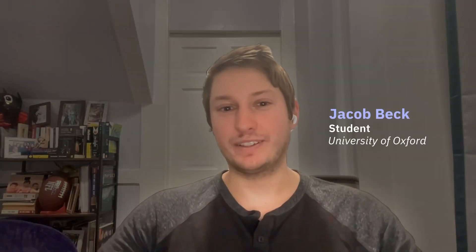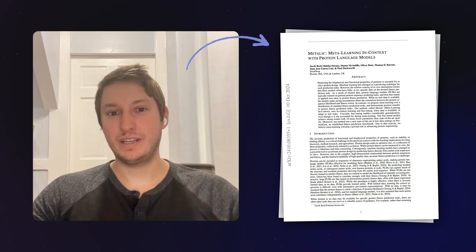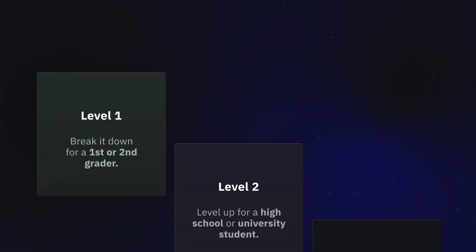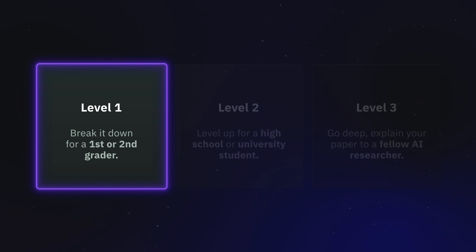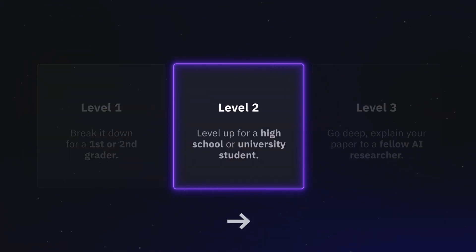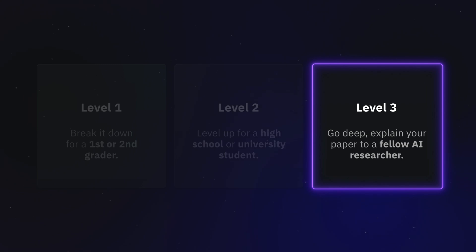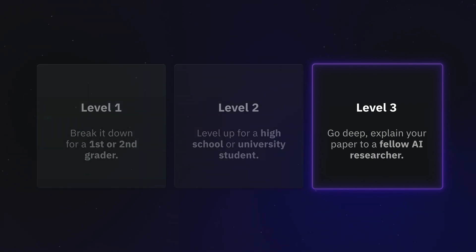Hi, I'm Jacob Beck. I'm currently doing my DPhil at the University of Oxford. We challenged researchers to explain their work across three levels of difficulty. First, they'll simplify their research for a young learner. Then they'll level up to explain it for a student. Finally, they'll dive deep for a fellow researcher.